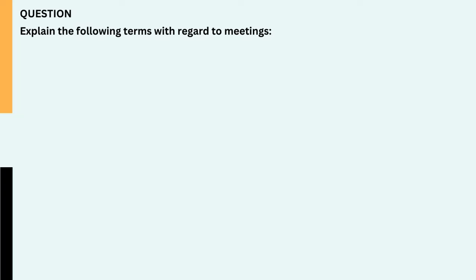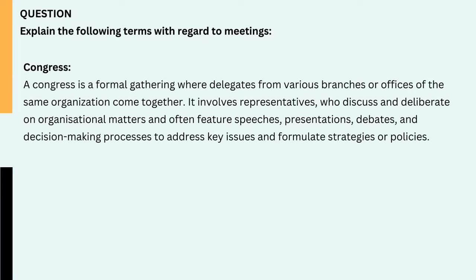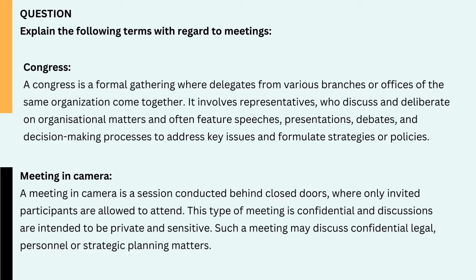Question: Explain the following terms with regard to meetings. 1. Congress. A Congress is a formal gathering where delegates from various branches or offices of the same organization come together. It involves representatives who discuss and deliberate on organizational matters and often feature speeches, presentations, debates, and decision-making processes to address key issues and formulate strategies or policies. 2. Meeting in camera. A meeting in camera is a session conducted behind closed doors, where only invited participants are allowed to attend. This type of meeting is confidential and discussions are intended to be private and sensitive. Such a meeting may discuss confidential legal, personnel, or strategic planning matters.